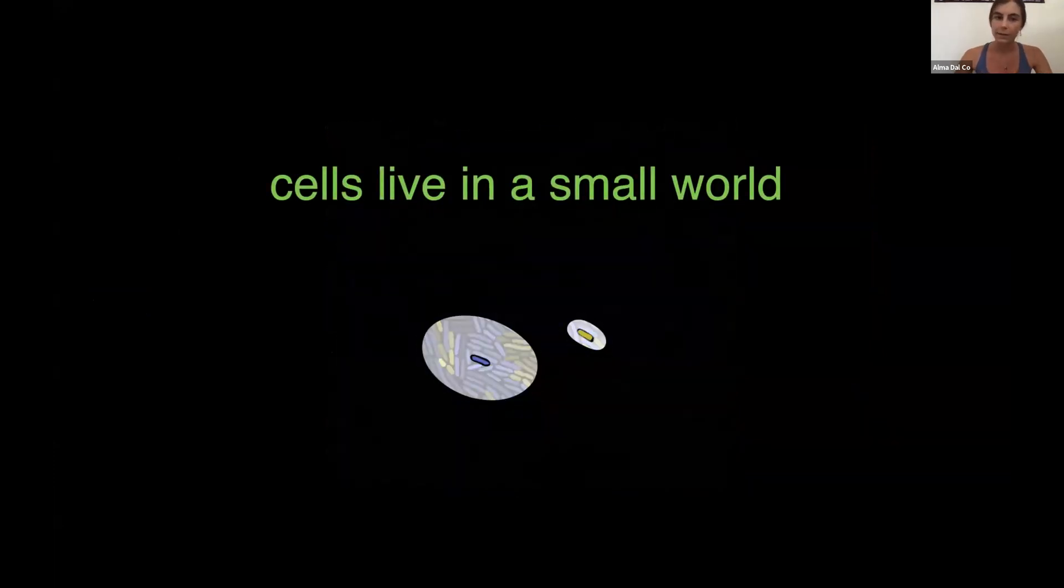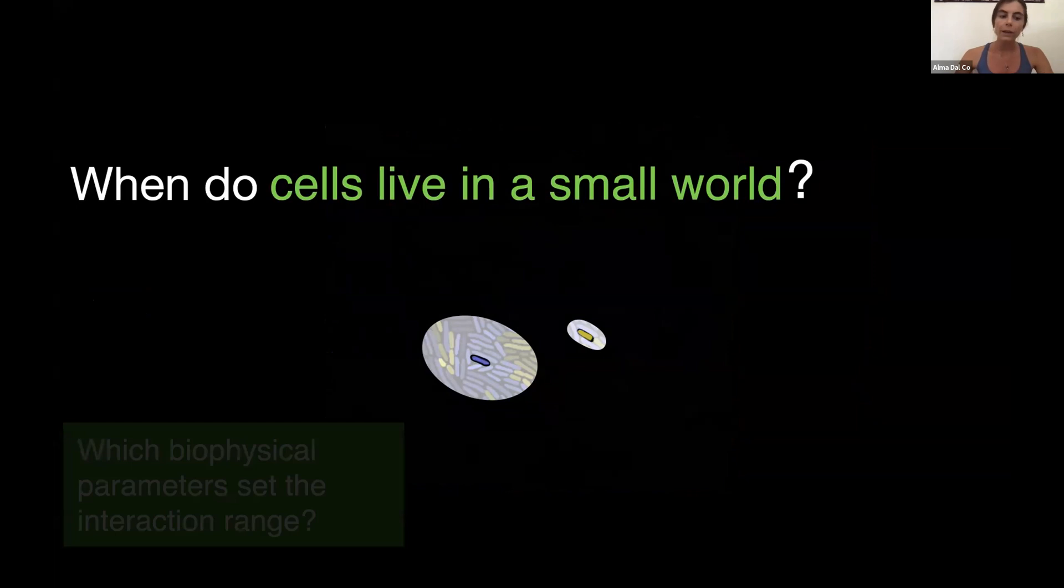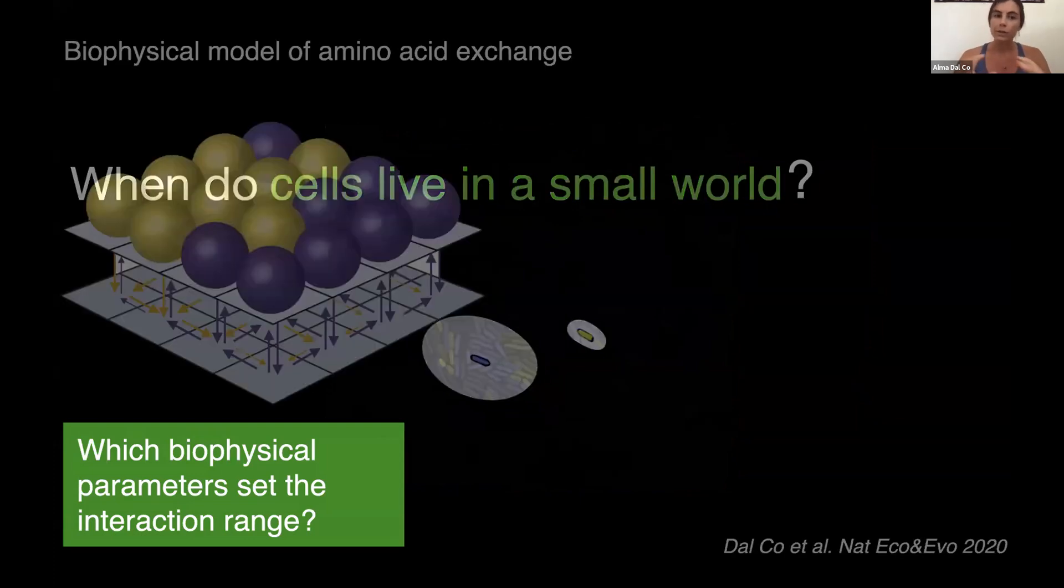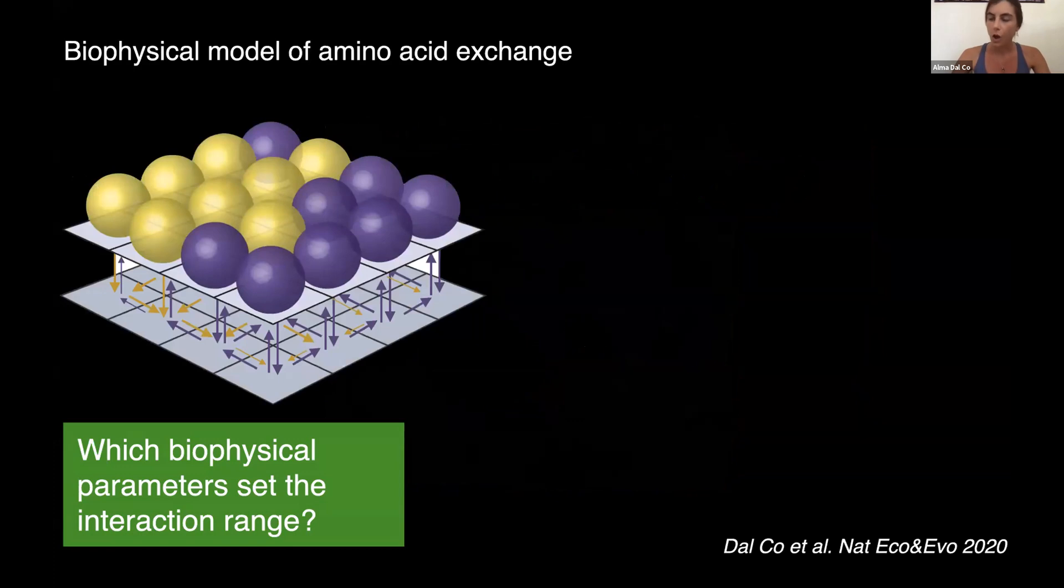So now the question was, when do cells live in a small world? Or in other words, what are the biochemical parameters that set the interaction range between single cells? To address this question, we constructed a biophysical model of amino acid exchange. So in this model, cells live in space and they exchange amino acids through diffusion in the extracellular environment.